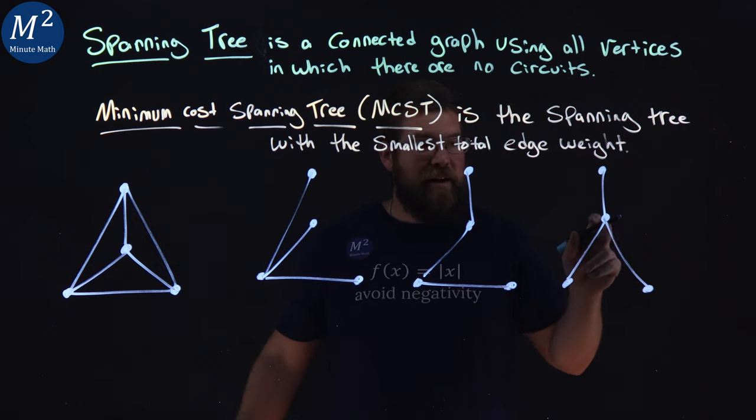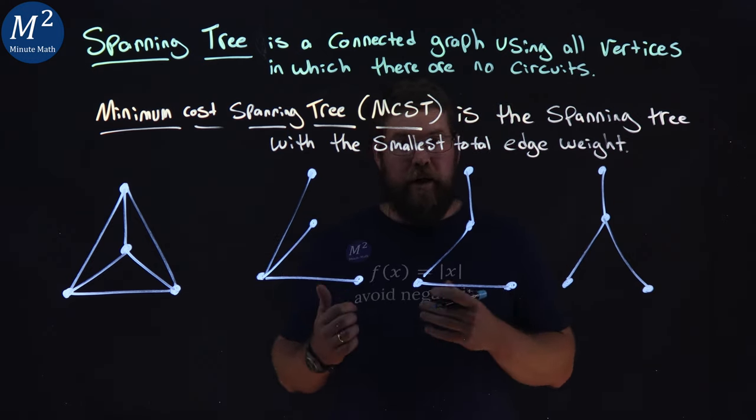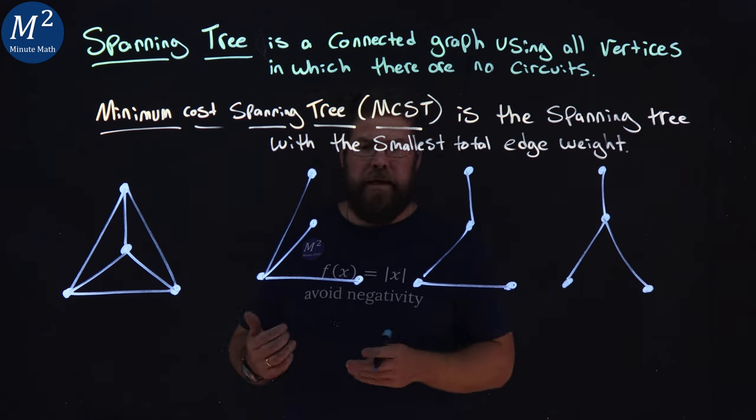This had a degree three right there at that point. Same here. That's totally fine. Now, what about the minimum cost spanning tree?